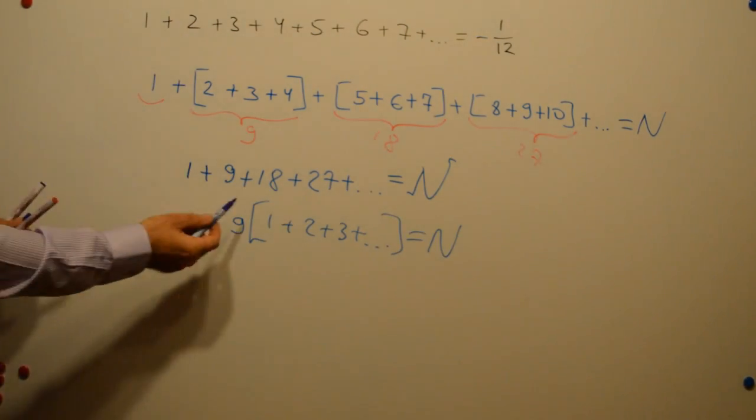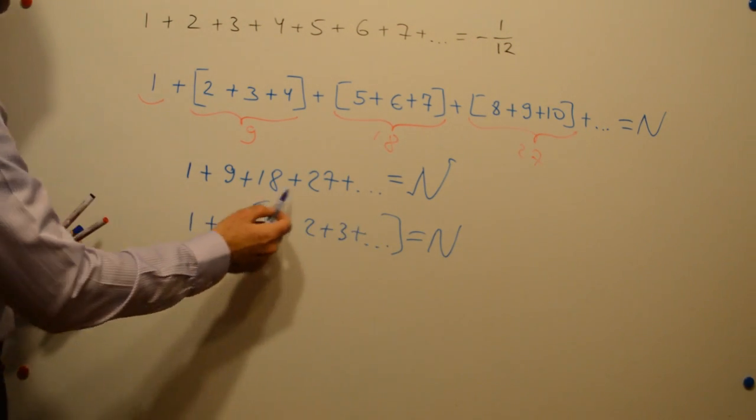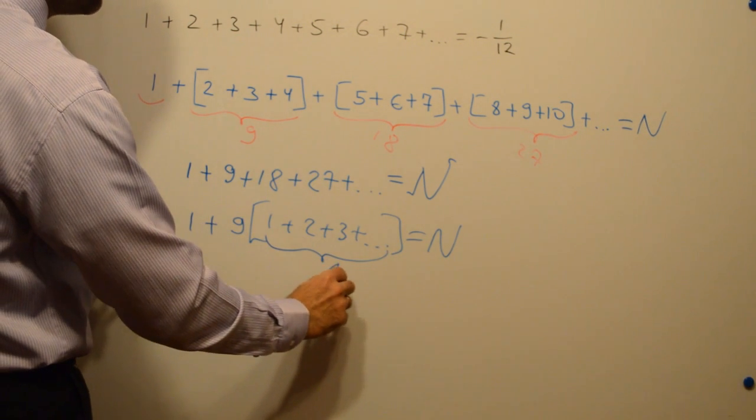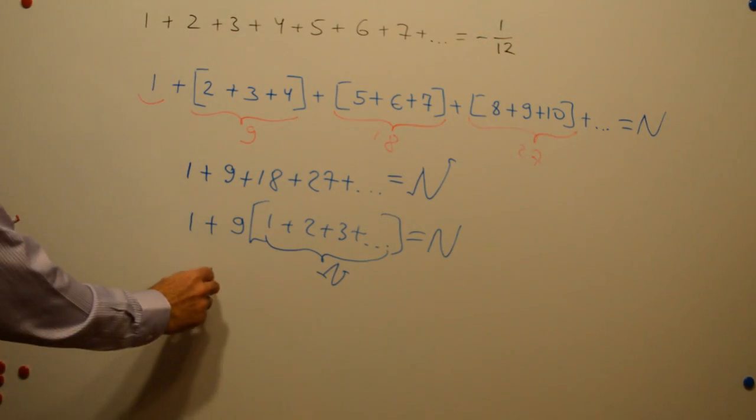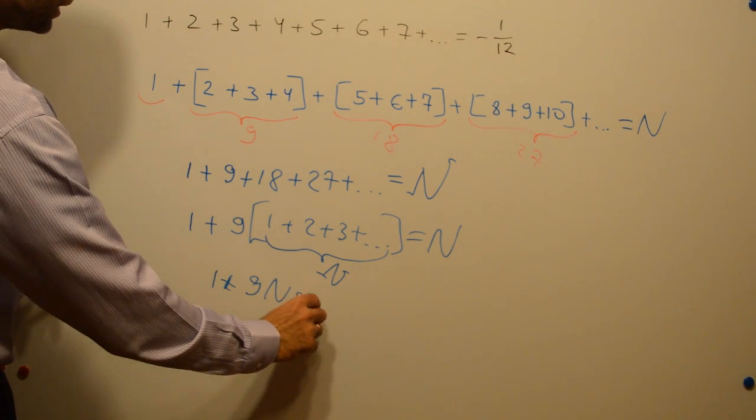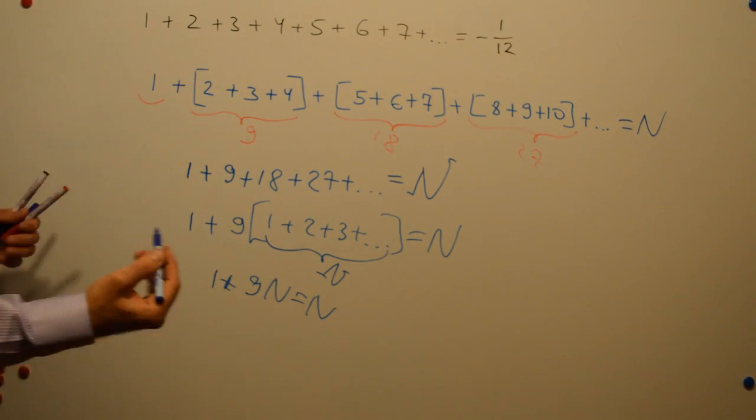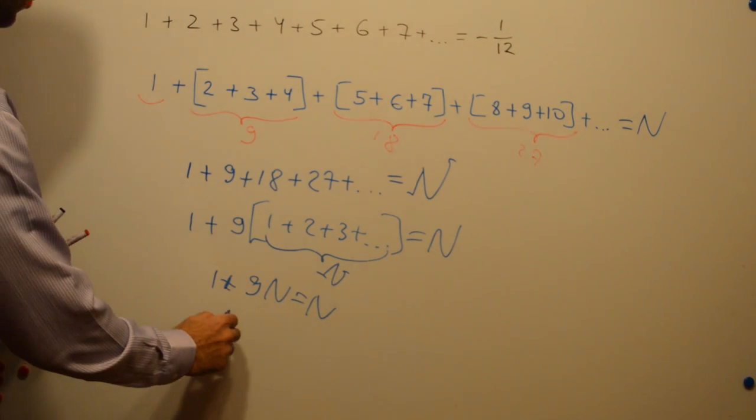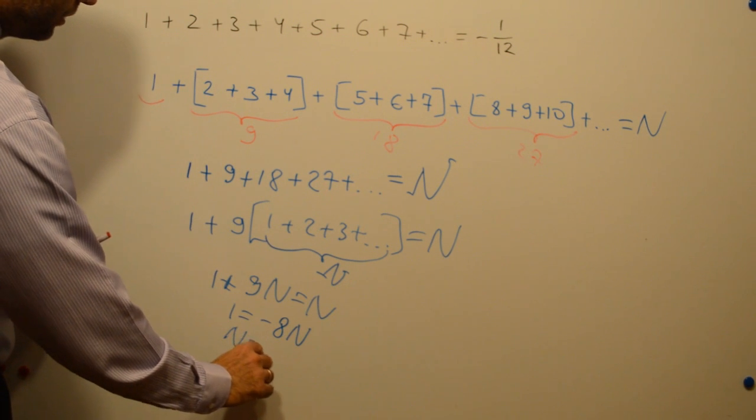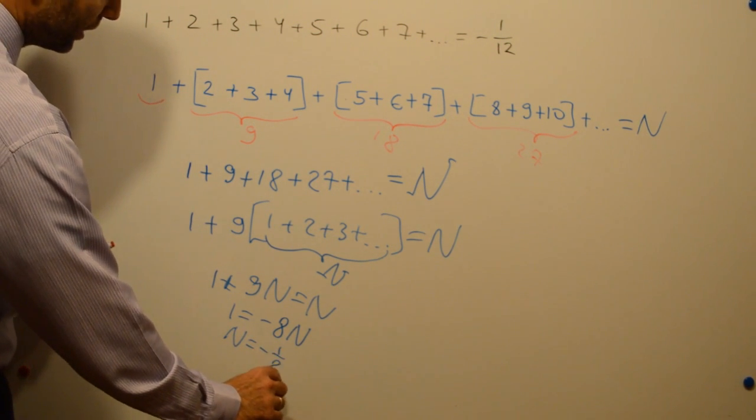And if we look closely we will realize that it's the same sum of all natural numbers n. So 1 plus 9n equals n which leads us to 1 equals minus 8n and n equals minus 1/8.